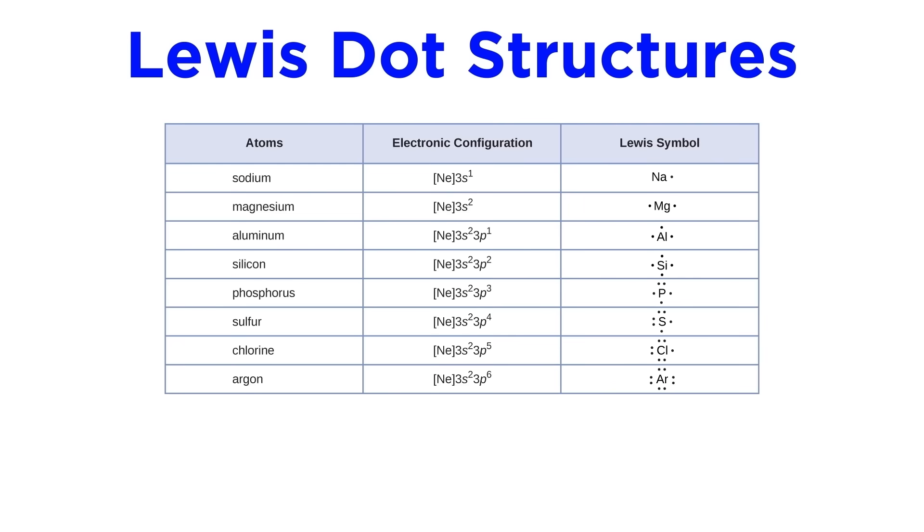For example, these are the Lewis symbols for the elements in period 3 of the periodic table. You can see how the dots are distributed as we go from 1 to 8 valence electrons, and we can see that up through silicon each electron is alone, and then from phosphorus to argon we begin placing a second electron in each coordination site.